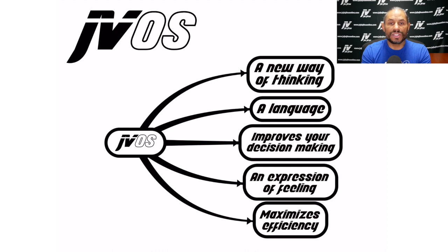So JVOS improves your decision making. So what does that mean? That means that when faced with binary choices, which we will cover in a different video, there are obvious choices and decisions that you make in a moment-by-moment basis. So my goal through JVOS is to get you guys to make the correct decision more frequently, if not always.